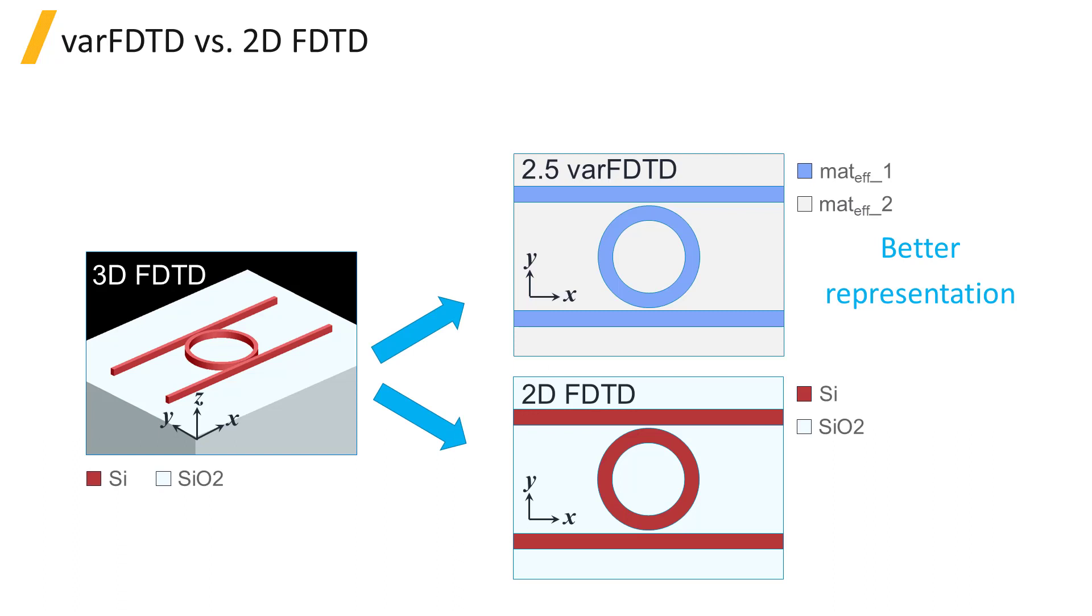The key difference between VARFDTD and a traditional 2D FDTD simulation is that VARFDTD automatically determines effective material properties for the 2D simulation that will give the closest representation of the actual 3D device, whereas a 2D FDTD simulation in FDTD solutions will simply take the cross-section of the physical structure, assuming that the structure is uniform in the third dimension.